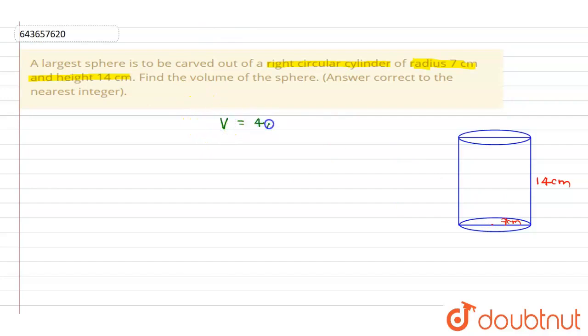Therefore, volume of that large sphere will be 4 by 3 pi r cube, which is volume maximum equal to 4 by 3 into, let's use pi is equal to 22 by 7, into 7 into 7 square.